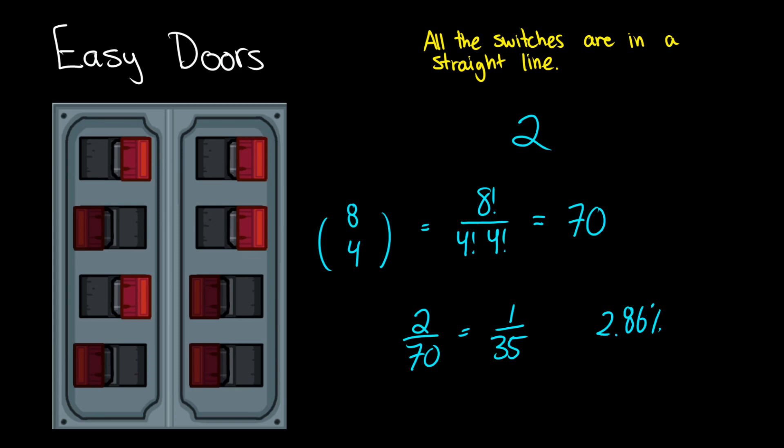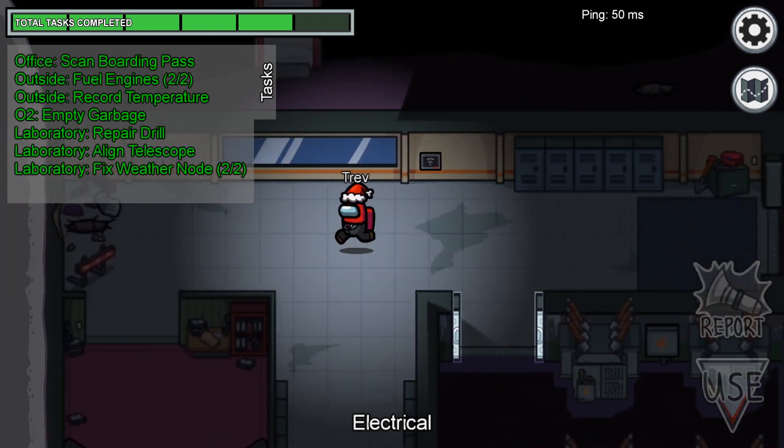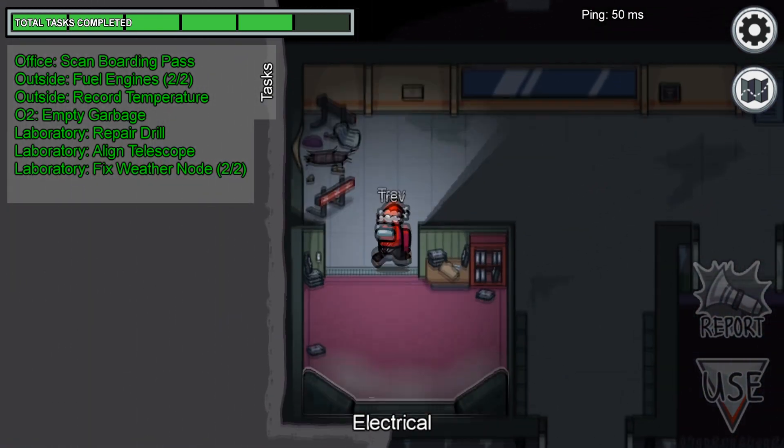Now, I don't know about you, but I've never seen all the switches on one side or the other in this game. I didn't take into account how the programmers might have programmed the specific minigame, so there's a good chance that the actual probability of that happening is less than 2.86%. This has been Probability in Among Us. I hope you don't get stabbed.